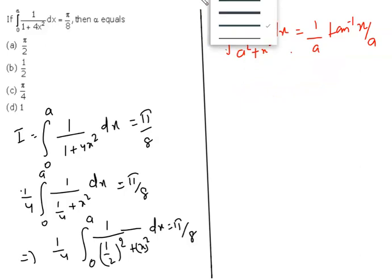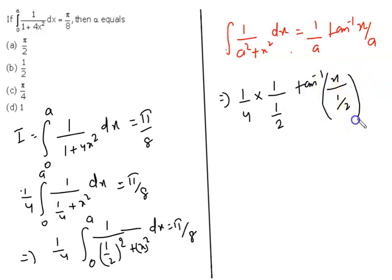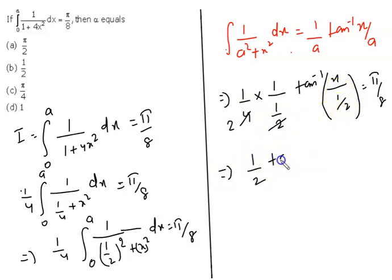Applying this formula with a = 1/2, we get: (1/4) × (1/(1/2)) × tan⁻¹(x/(1/2)), which simplifies to (1/4) × 2 × tan⁻¹(2x) = (1/2) tan⁻¹(2x), equal to π/8. The limit from 0 to a is also present.